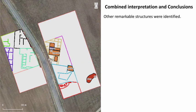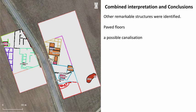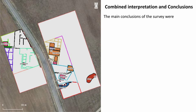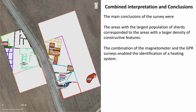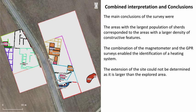Other remarkable structures were identified: a paved floor, a possible canalization, a pathway, and an undetermined large structure. The main conclusions were that the areas with the largest population of sherds corresponded to the area with the larger density of constructive features, that the combination of the magnetometer and the GPR survey enabled the identification of a heating system, and that the extension of the site could not be determined as it is larger than the explored area.